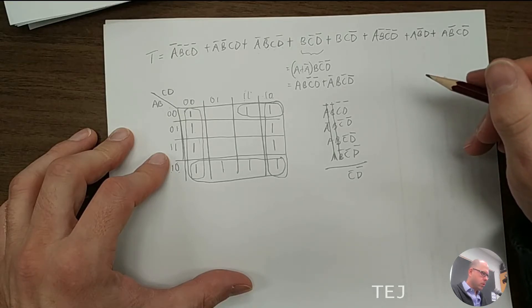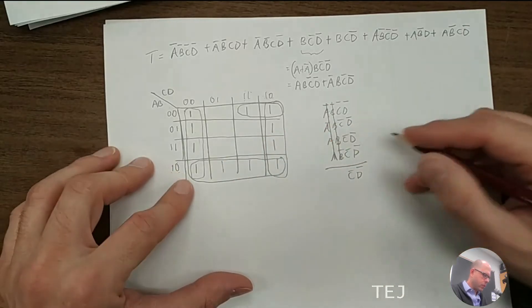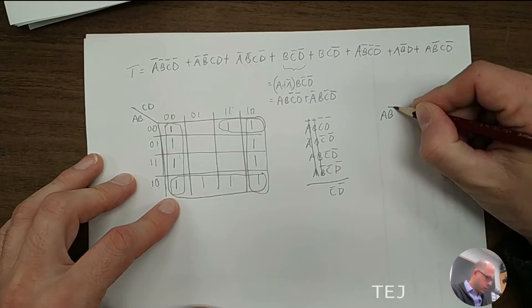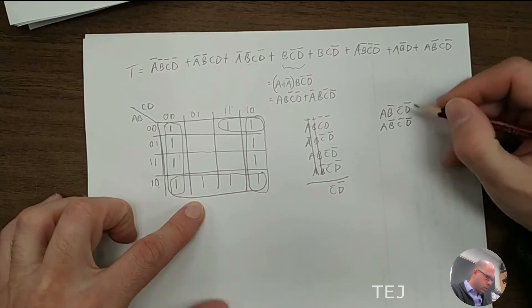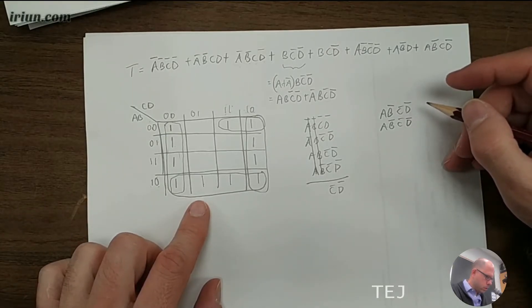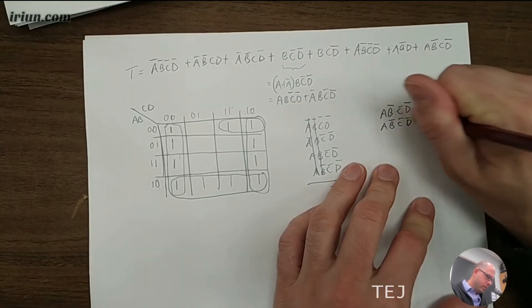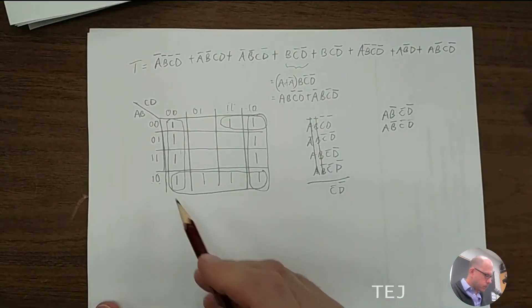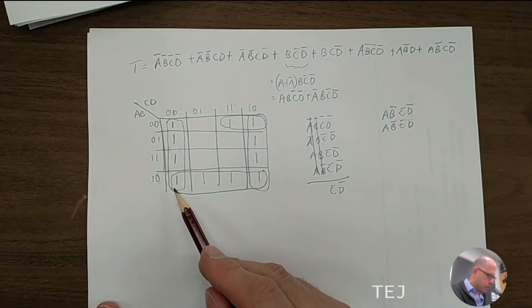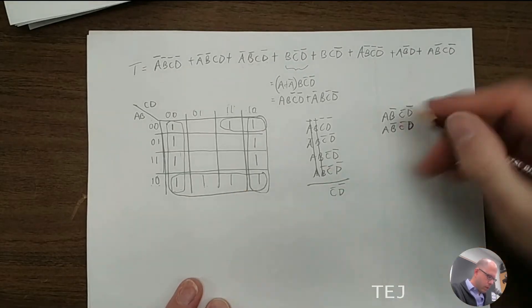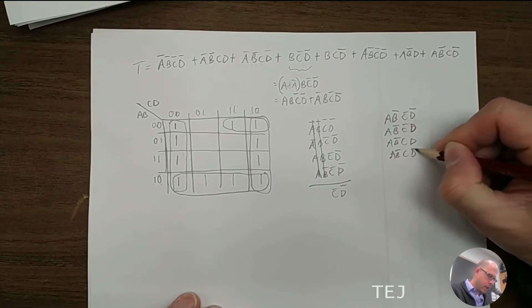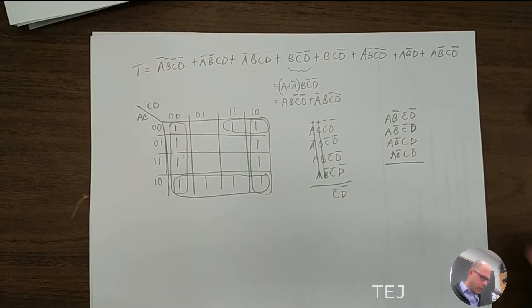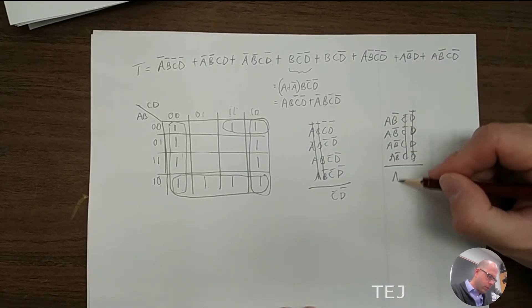And now what are we going to do next? Next we're going to do the next one here. So we have a, b naught, c naught, d naught. a, b naught, c naught, d. Then we have a, b naught, c, d. And then finally, a, b naught, c, d naught. So the d's cancel. The c's cancel. We're left with a, b naught.